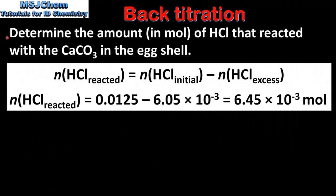Next we determine the amount in moles of hydrochloric acid that reacted with the calcium carbonate in the eggshell. To do this we subtract the moles of excess hydrochloric acid from the initial amount: 0.0125 − 6.05 × 10⁻³, which gives us 6.45 × 10⁻³ mol.